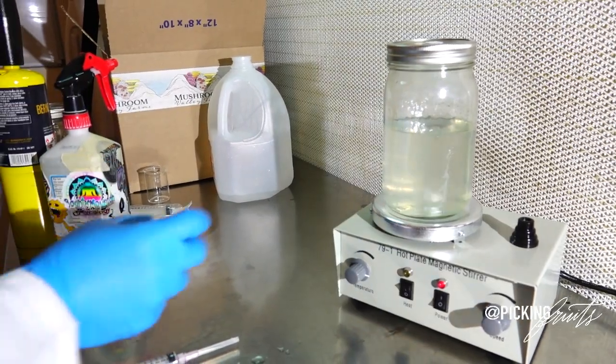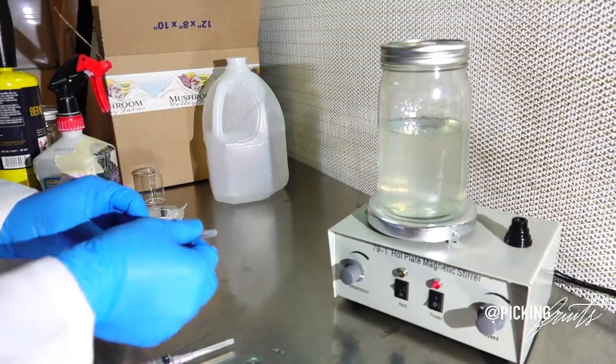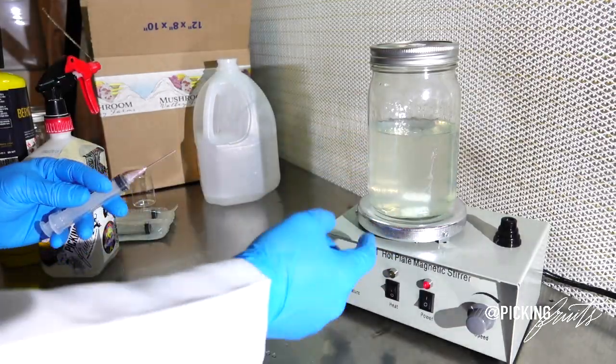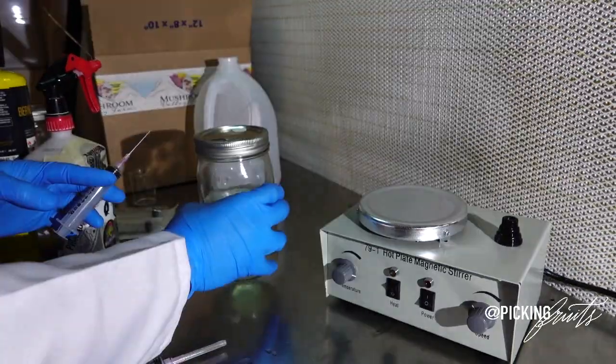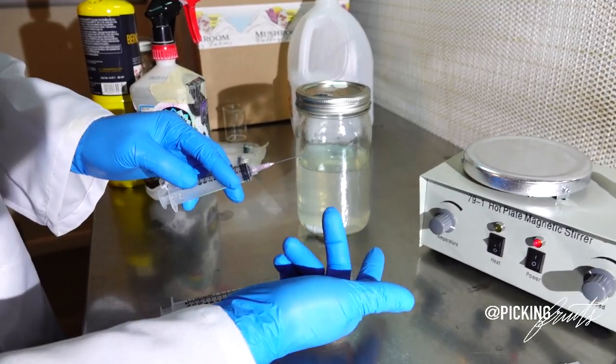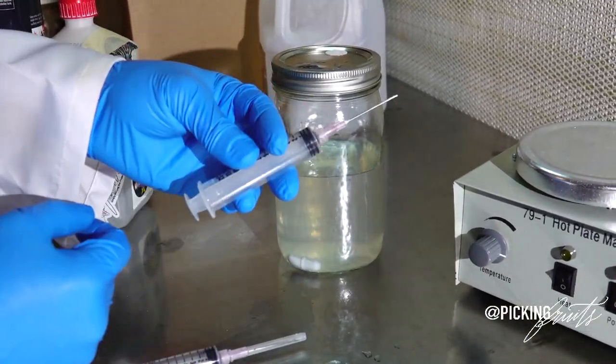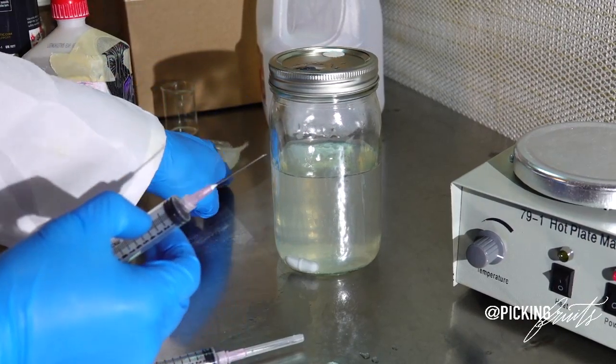So we are going to fast forward and pretend that it has been a week or so and we have a ton of mycelial mass inside of our jar. And now we're going to do the backward process of what we just did. So we're going to take an empty syringe, preferably a new one.